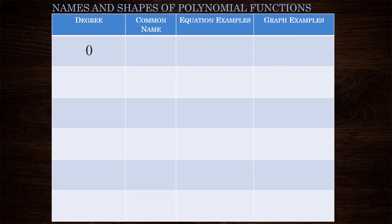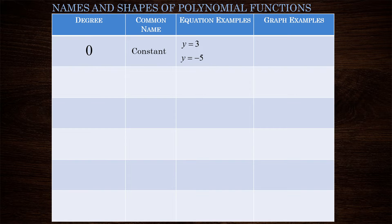Let's start with polynomial functions of degree zero. These are functions for which the exponent on x is no higher than zero, and that means they're our constant functions. Some examples are y equals three and y equals negative five — notice we don't see the x term here. On a graph they are horizontal lines, so those are our degree zero polynomial functions which we call constant functions.